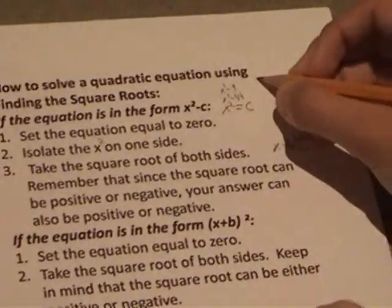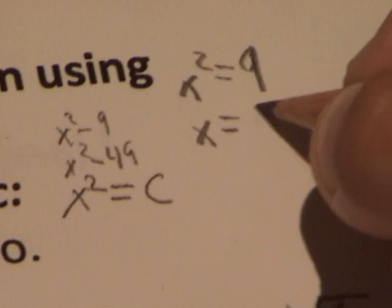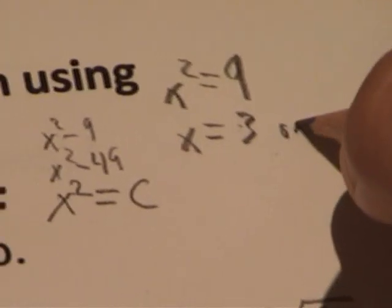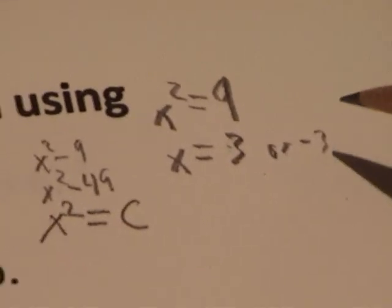Take this example, it would be x squared equals 9, x equals 3 or negative 3, because a negative times a negative is a positive.